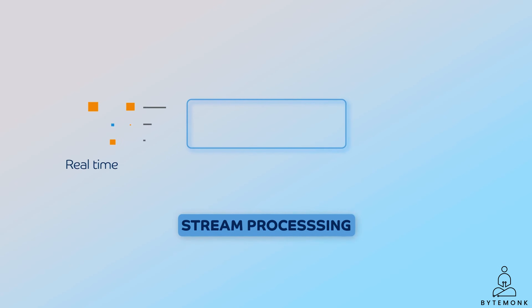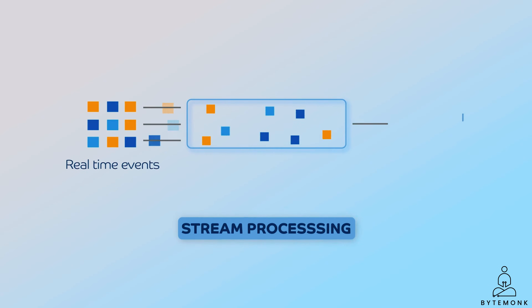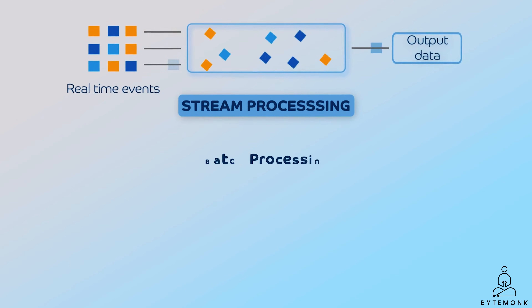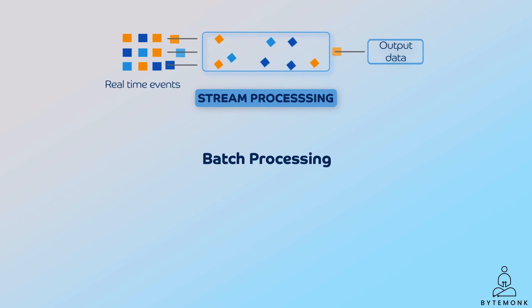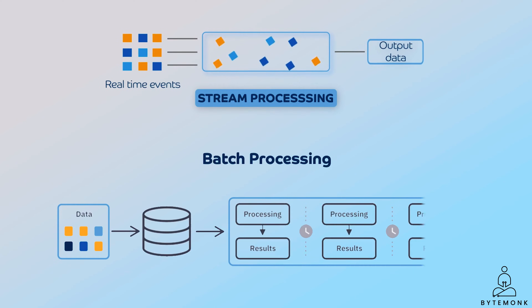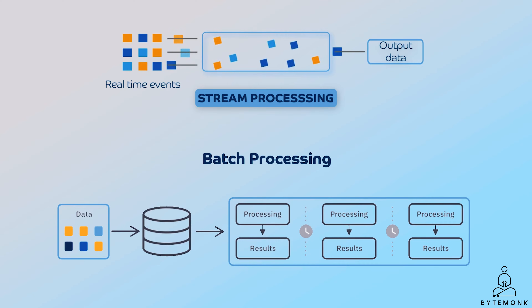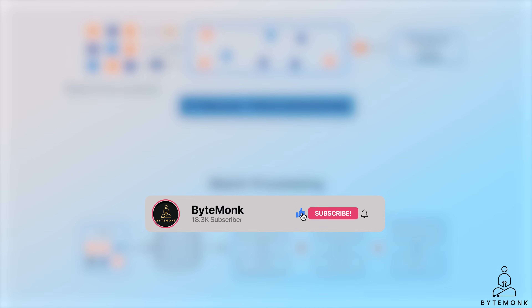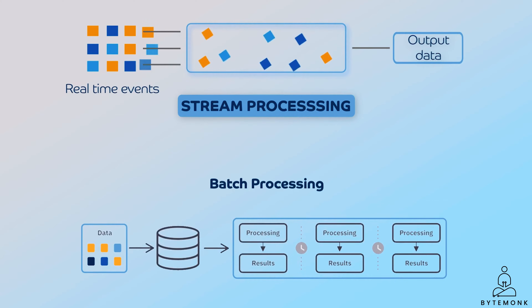Stream processing is the process of analyzing and processing data in real time as it is being generated. This is in contrast to batch processing, which analyzes data after it has been collected and stored. This allows stream processors to provide real-time insights and analytics on data, which can be used to make better decisions faster.